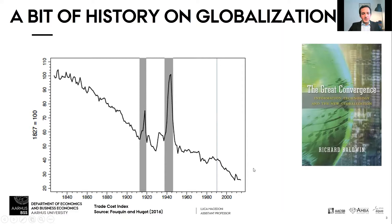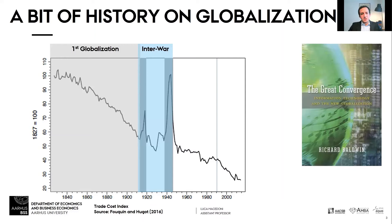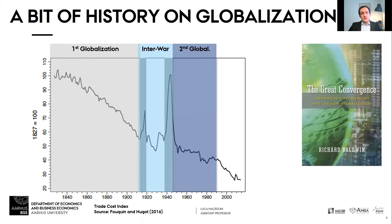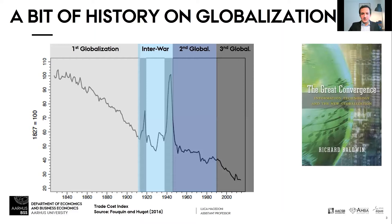This is a very simple way of thinking of globalization: as a reduction in trade costs. Historically, we can define four different eras. The first globalization coincides with the Industrial Revolution and subsequent developments, stopped by World War I. Then there is an interwar period where globalization is on pause. After World War II we have a second globalization, and since the 90s we have a third one, which has taken predominantly the shape of offshoring.